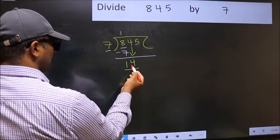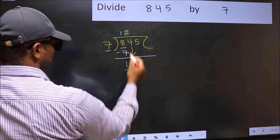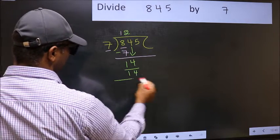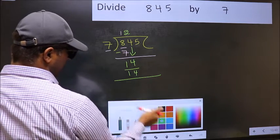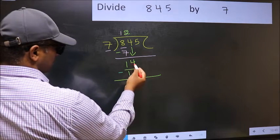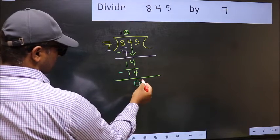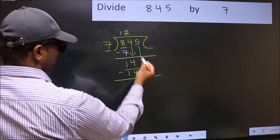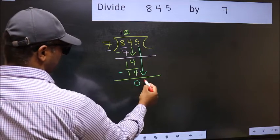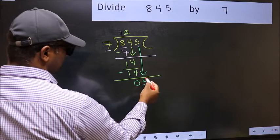Now 14, when do we get 14 in 7 table? 7, 2 is 14. Now you should subtract. 14 minus 14, 0. After this, bring down the beside number. So 5 down.